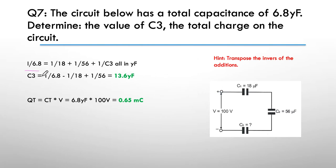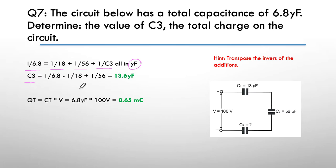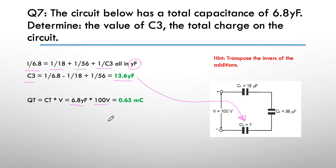We know that 1/6.8 equals 1/18 plus 1/56 plus 1/C3, leaving everything in microfarads. So 1/C3 equals 1/6.8 minus (1/18 plus 1/56). If you put that in your calculator you'll come out with 13.6 microfarads — that's the value of C3. For the total charge: total capacitance is 6.8 microfarads, voltage is 100 volts across the circuit, which gives 0.65 millicoulomb.